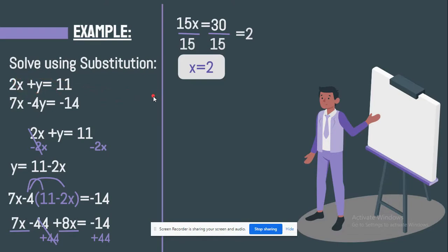So the more easier and simpler the equation is, the more faster you'll solve the whole substitution method. So you're just going to plug number 2 here. So it's going to be 2 times 2, closing bracket, plus y equals 11.